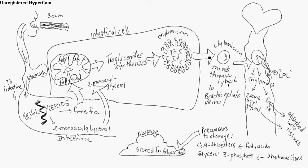This gets transported out of the intestinal cell. And the chylomicron travels through the lymph to the brachiocephalic vein and enters the bloodstream.